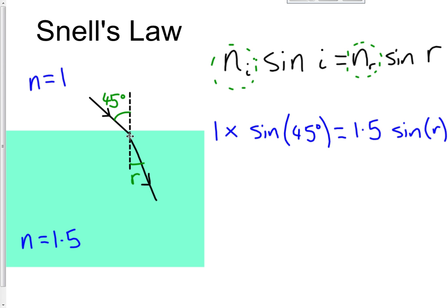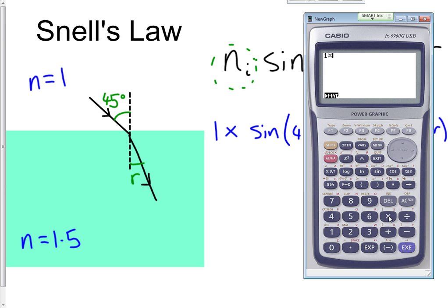Before you do this calculation it's worth checking your calculator is in the right mode. If you're using sine, cos, or tan you want to know whether your calculator is in degrees mode or radians mode. A quick check: do sine of 90 and see what you get.